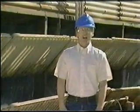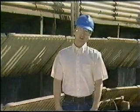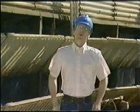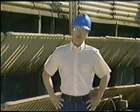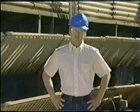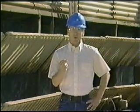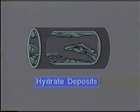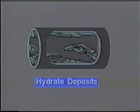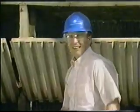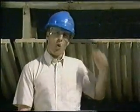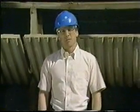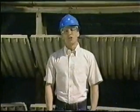Most unprocessed natural gas contains water, either in free or vapor form. The presence of water in natural gas causes two major problems in transmission: corrosion and hydrate formation. Corrosion causes pitting and damage in pipelines, while hydrates deposit on the pipeline interior and restrict the flow of gas through the pipeline. As you can see, water in natural gas is a serious problem, so the removal of that water is very important.